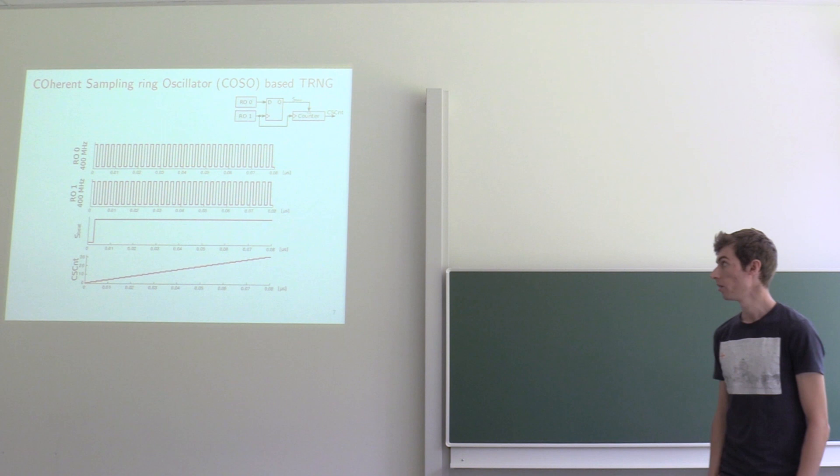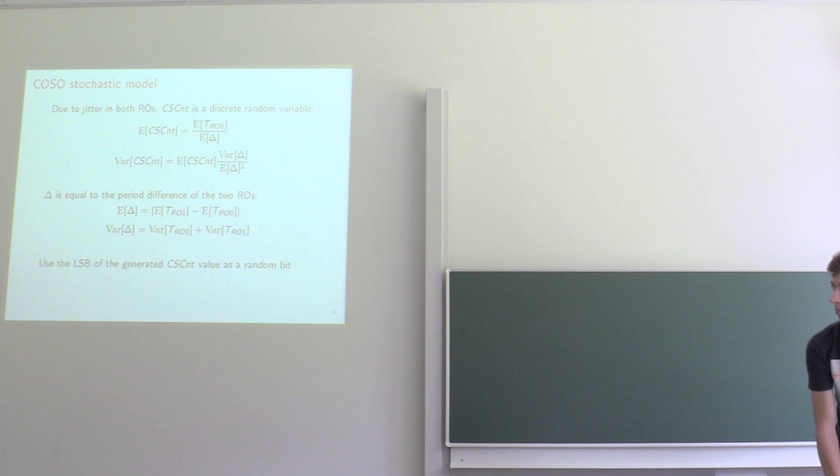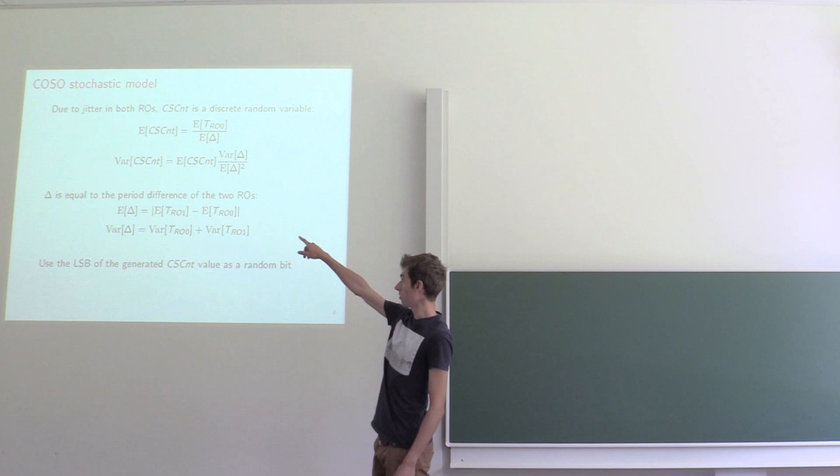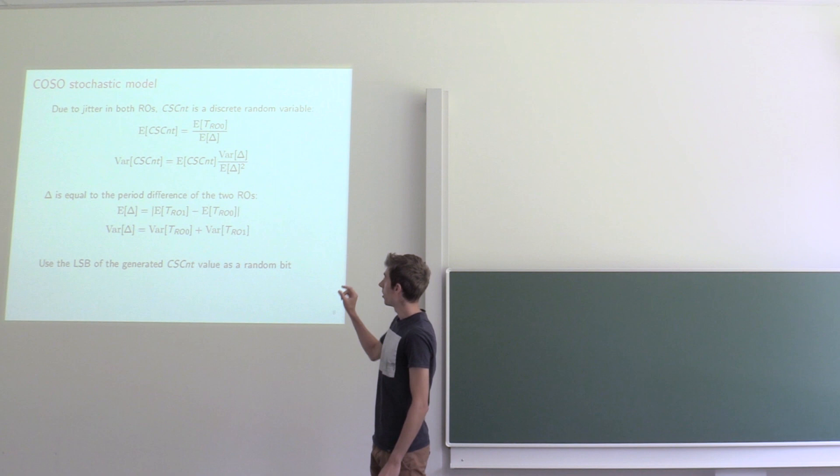So your throughput will be zero. This can be explained in a stochastic model. Here we can see that the variance of your counter output is proportional to the expected value of your counter output.